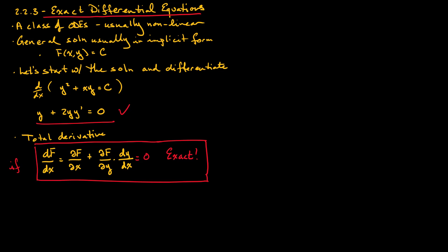We'll see where we might encounter these later in this video. If we encounter an ODE of the form y + (2y + x)·y′ = 0, and we suspect that it might be exact, what we need to do is test for exactness. That is, we want to check if y equals the partial of f with respect to x, and if 2y + x equals the partial of f with respect to y.